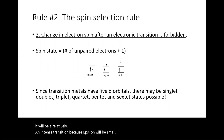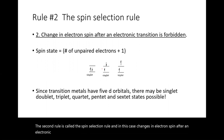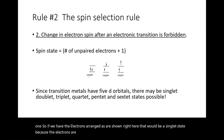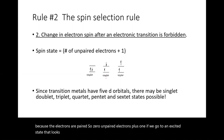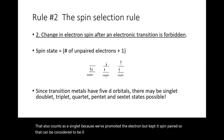The second rule is called the spin selection rule: changes in electron spin after an electronic transition are forbidden. The spin state is the number of unpaired electrons plus one. If electrons are paired, that is a singlet state (zero unpaired electrons plus one). If we promote an electron but keep it spin-paired in the excited state, that also counts as a singlet — zero unpaired electrons plus one.